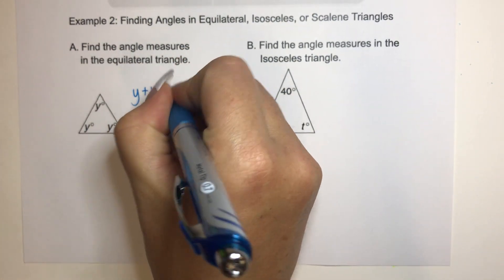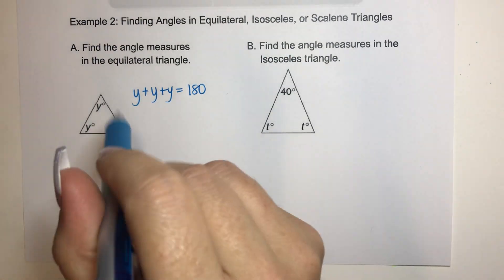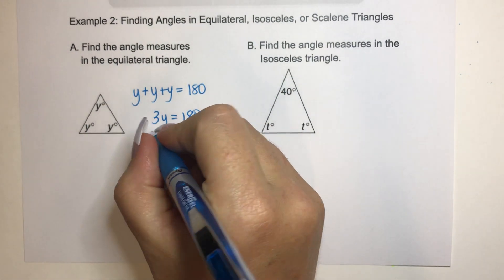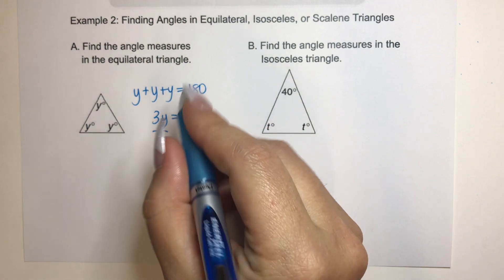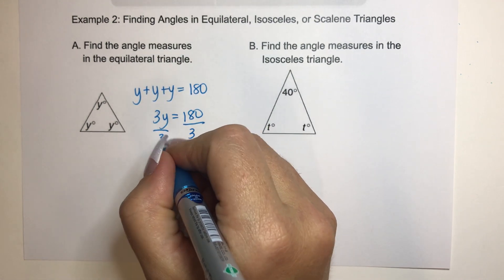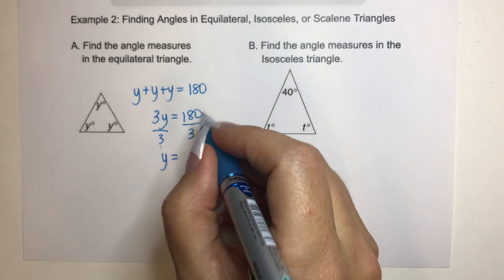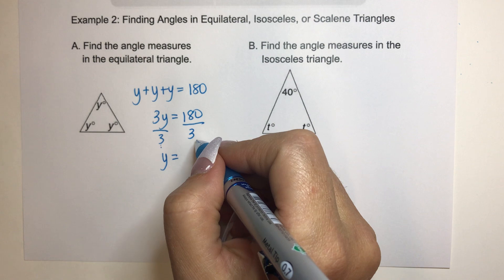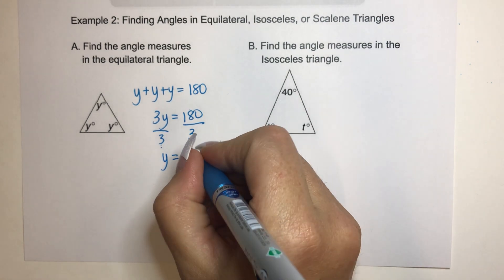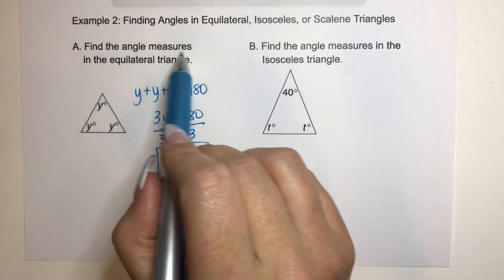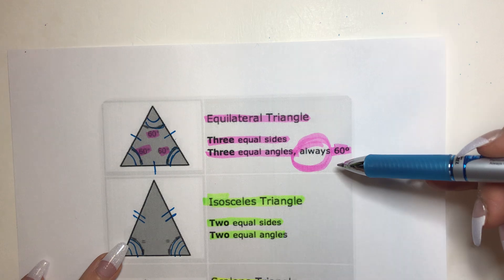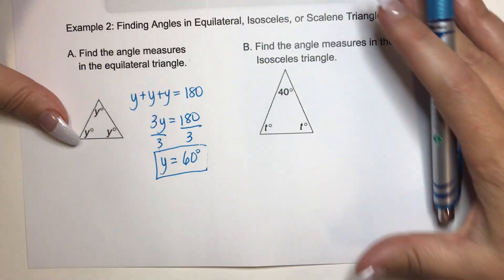Y plus y plus y is 3y equals 180. We want to get y by itself, so we divide both sides by 3 — that's the inverse operation of multiplication. 3 divided by 3 is 1, so y equals 180 divided by 3, which is 60. So each angle is 60 degrees. We noted earlier that equilateral triangles always have angle measures of 60 — and we just proved it.